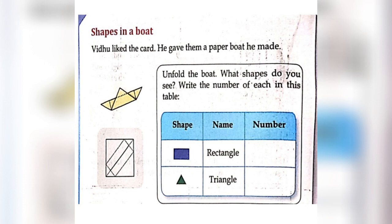Here we can see the shape of a rectangle and a triangle after unfolding the boat. In the unfolded picture, we can see that there are 4 rectangles and 8 triangles.